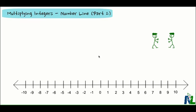I'm going to continue to multiply integers using a number line model. Here I'm going to multiply negative 5 times a positive 2. So negative 5 times positive 2.